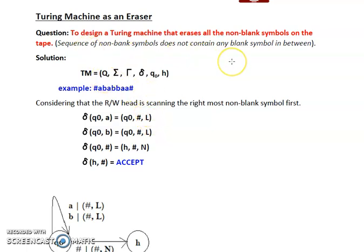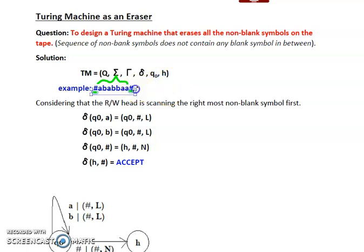Now let's solve this question in which we need to create an eraser that can erase all the non-blank symbols from the string. The starting and ending of the string is represented by a blank symbol hash. All symbols between these two hashes are non-blank symbols, and these non-blank symbols need to be replaced by a hash in order to delete the string. Our objective is to erase all the elements of this string by replacing each and every element with a hash.